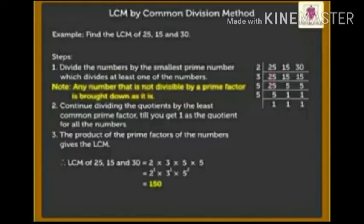We know that 15 is divisible by 3. When we divide 15 by 3, we get 5. So we write 5 below both the 15s. But here 25 is not divisible by 3, so we bring it down as is. Next prime number is 5.